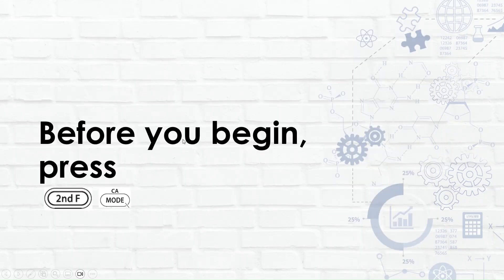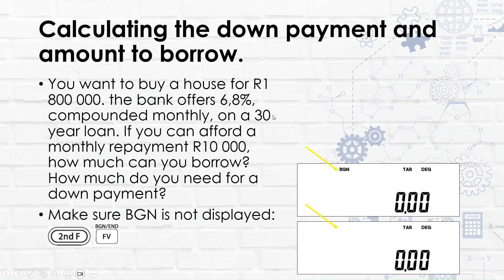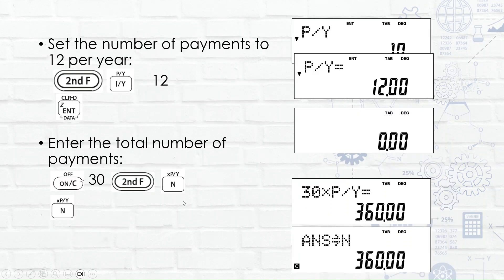Last example — press second function and mode first. We want to calculate the down payment and amount to borrow on a house costing 1.8 million rand. The bank offers 6.8% compounded monthly on a 30-year loan. If you can afford 10,000 rand per month, how much can you borrow and how much deposit do you need? Since it's a loan, BGN must not be displayed — press second function and future value to turn it off.